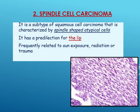The second variant is spindle cell carcinoma. It has a predilection for the lip, so it is related to sun exposure. It is called spindle cell carcinoma because, under the microscope, it is characterized by the presence of spindle-shaped atypical cells.